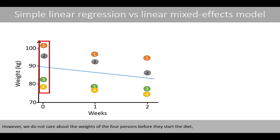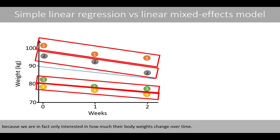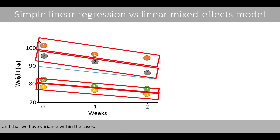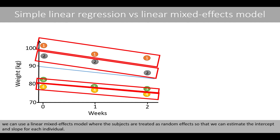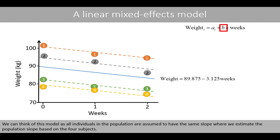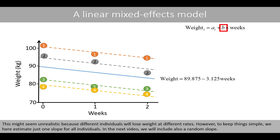However, we do not care about the weights of the four persons before they start the diet, because we are only interested in how much their body weights change over time. To deal with variations in body weights between individuals — which is irrelevant in this case — and variance within cases, we can use a linear mixed effects model where the subjects are treated as random effects, so that we can estimate the intercept and slope for each individual. Using a linear mixed effects model can be seen as fitting lines to each subject. Here I have used a model with random intercepts and a fixed slope, meaning all individuals are assumed to have the same slope. In the next video, we'll include also a random slope.